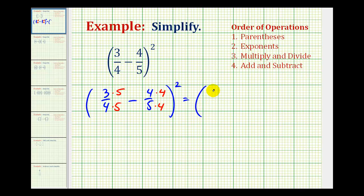So we'll have fifteen-twentieths minus sixteen-twentieths, and this is all squared. Now that we have a common denominator, we can go ahead and subtract these two fractions. So the denominator is going to be 20.